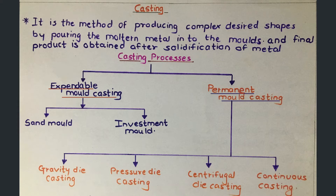Now we will see the types of casting processes. Casting processes are mainly of two types: expandable mold casting and permanent mold casting.